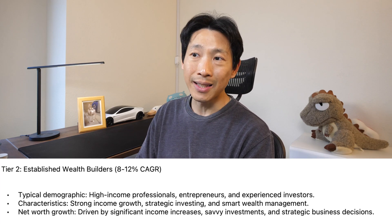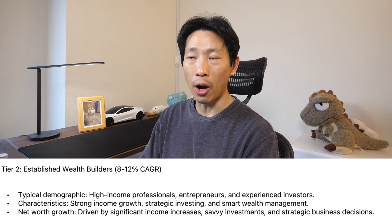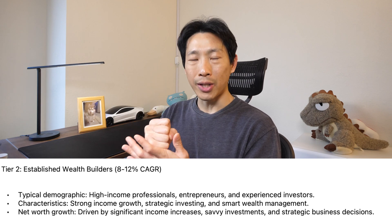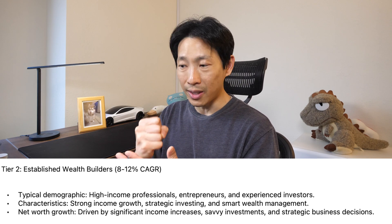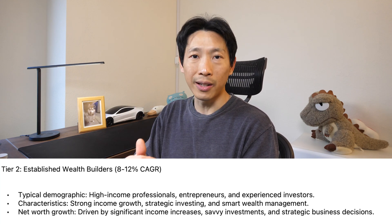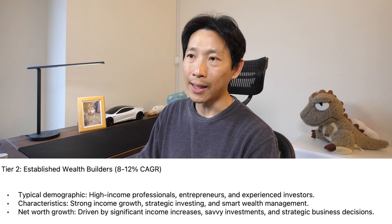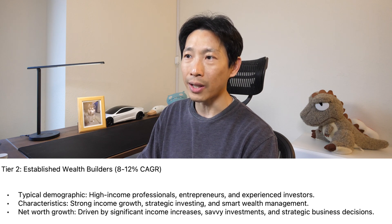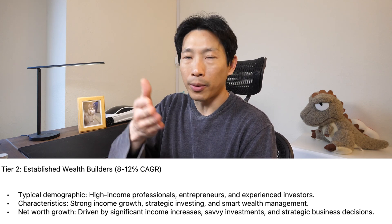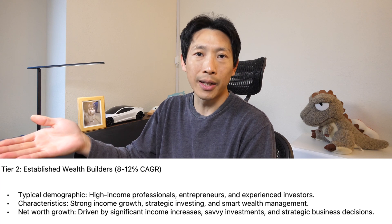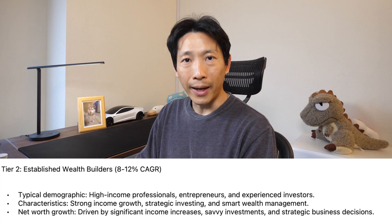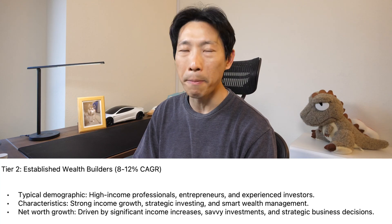The next tier is established wealth builders: 8 to 12% compounded annual growth rate — every single year, year after year. This is very, very nice; you could almost not work if you have a significant net worth at this rate. The typical demographic includes high-income professionals, entrepreneurs, and experienced investors with strong income growth, very strategic investments, and smart wealth management. Net worth growth is driven by strategic business decisions. As an engineer, I keep jumping from job to job and sometimes get a 25% salary increase.